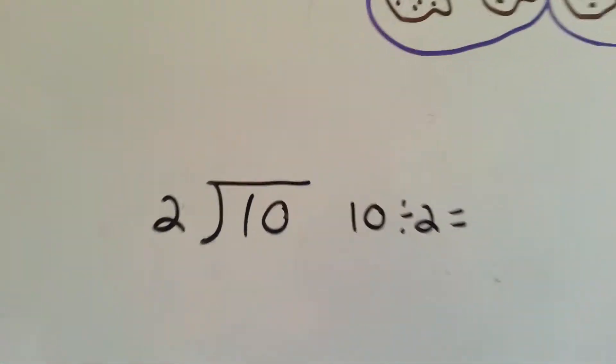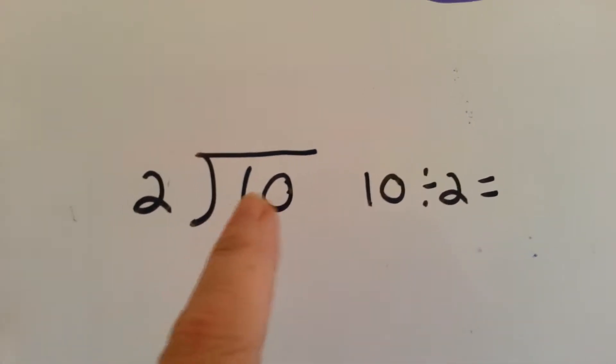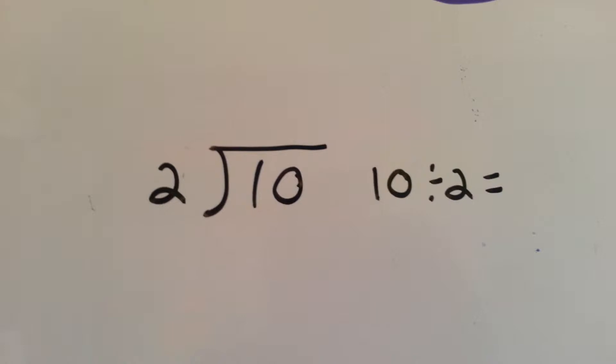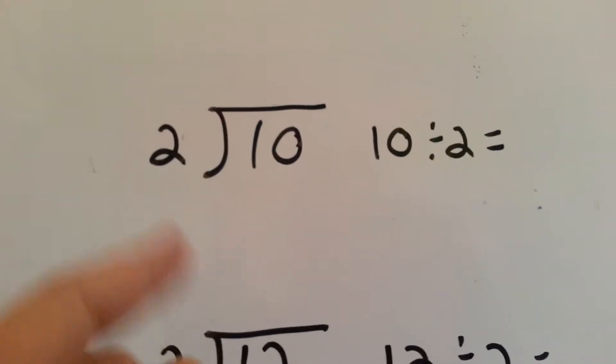How about here? Can you do it without the dots? 10 divided by 2. We can do the inverse operation of multiplication to help us figure it out. Let's count to 10 by 2's and see how many fingers we use.